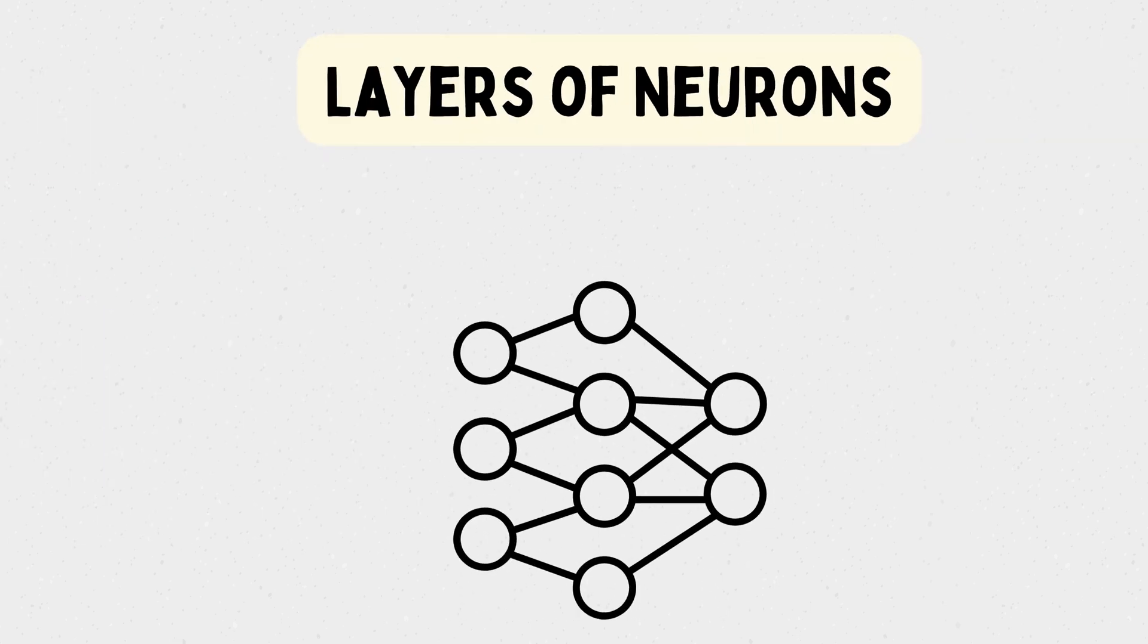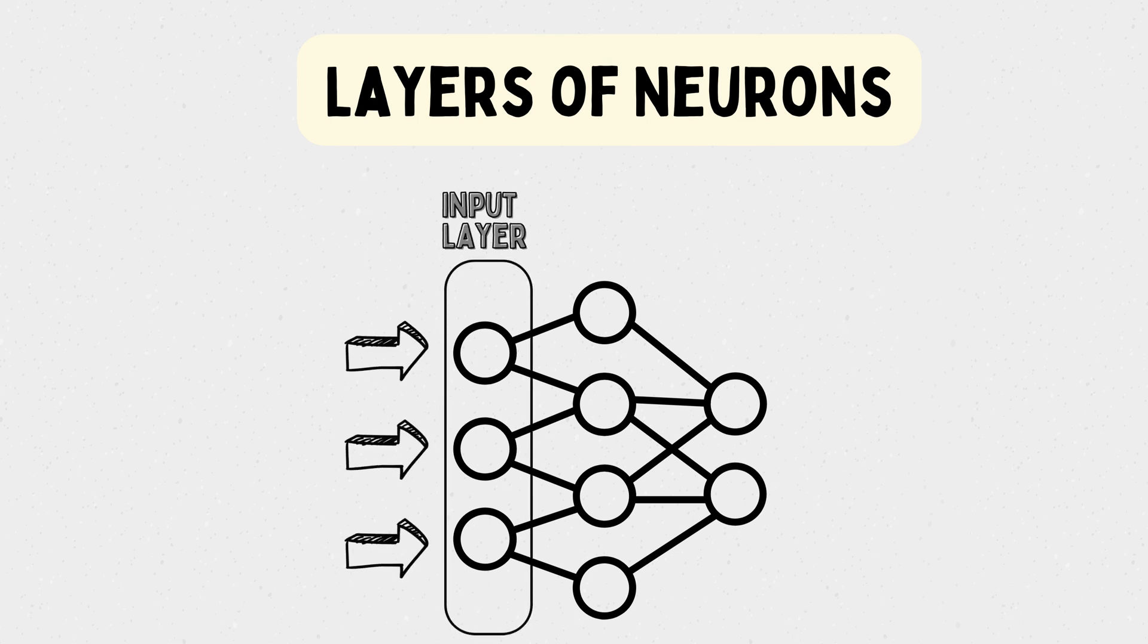Neural networks are organized into layers of neurons, typically categorized into three types. The input layer receives the initial data or features as inputs. Each neuron represents a feature or attribute of the data.